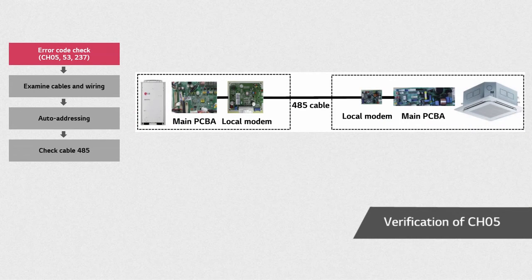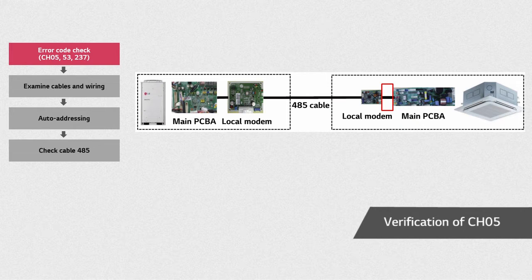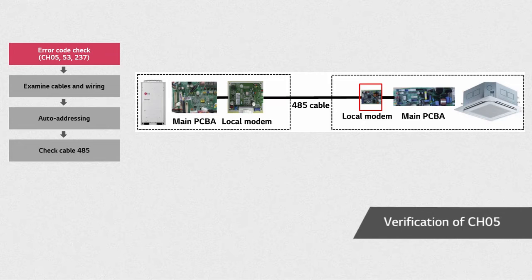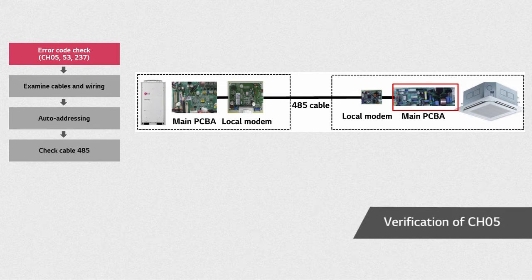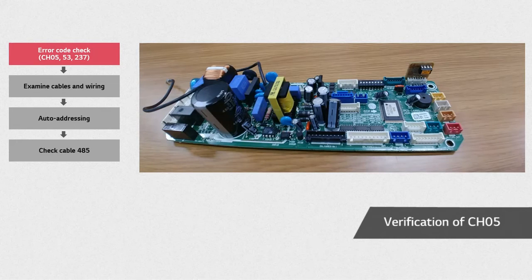When error CH05 occurs, first, check the connection between the indoor unit's local modem and the main PCB. Second, check the local modem state and replace it if any malfunction is found. Finally, check the main PCB of the indoor unit, and if any defects are found, replace it as well. When replacing the main PCB, leave the optional PCB as it is.